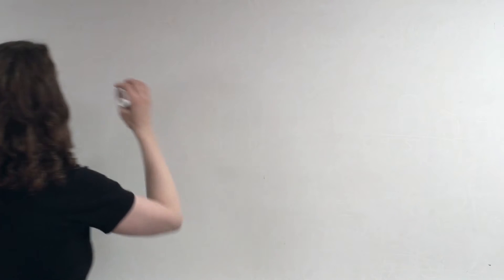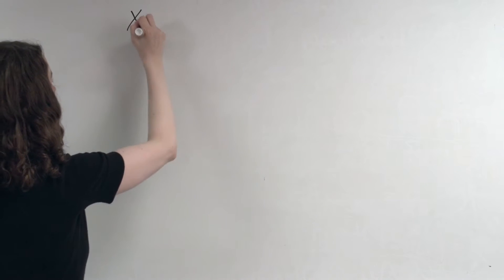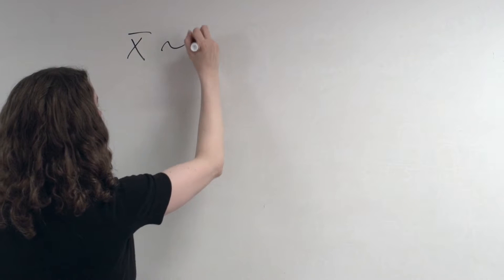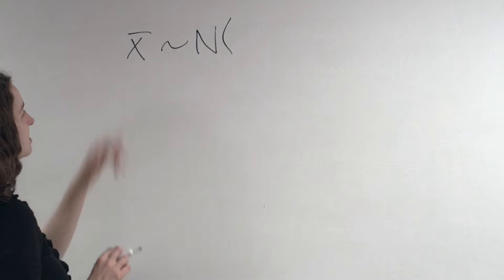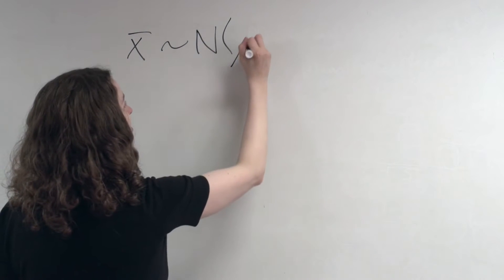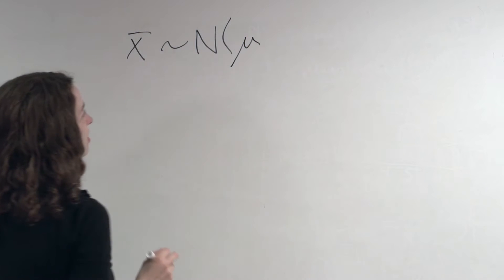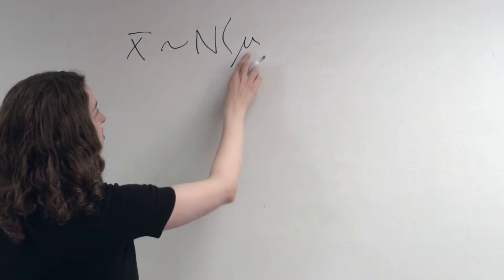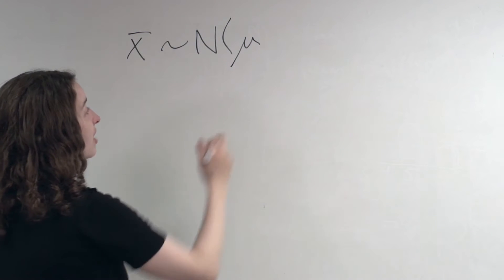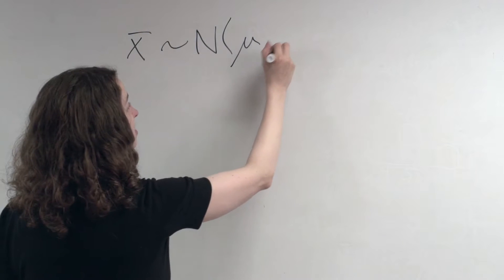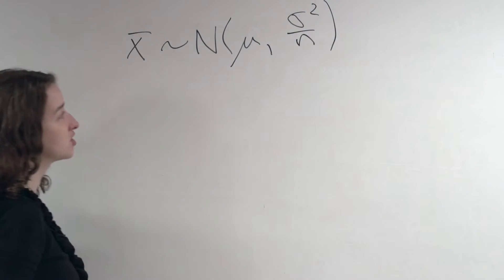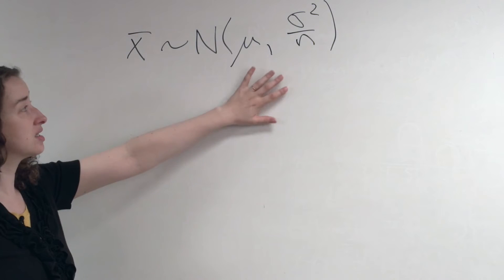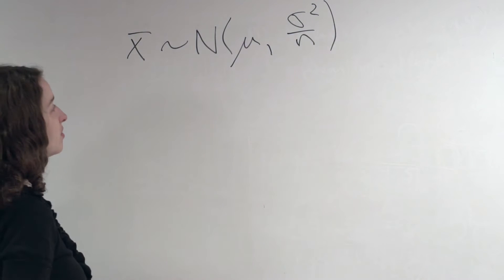The idea we had with one-sample t-tests was that we could take advantage of the central limit theorem to say that our estimate of the mean, x-bar, will follow a normal distribution centered at the true population mean with variance sigma squared over n. This is the statement of the central limit theorem that we used.